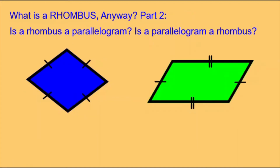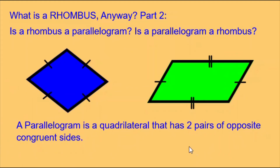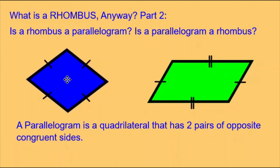We're answering the question: is a rhombus also a parallelogram, and is a parallelogram also a rhombus? To answer this, we need to look at the definitions of each shape. A parallelogram is a quadrilateral that has two pairs of opposite congruent sides. We can see that this green parallelogram is indeed a parallelogram, because the little lines on the short sides show they are congruent, and the double lines on the long sides show they are also congruent. But so is the blue rhombus — all four sides are congruent, so it can be said to have two pairs of opposite congruent sides. That means all rhombuses are also parallelograms.